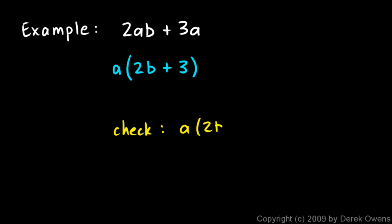a times (2b plus 3). It's easy to do. You can probably do this in your head. a times 2b is 2ab, and a times 3 is 3a, and that is in fact our original expression. So this is the correct answer. This is factored. It's broken apart into two factors. Two things that multiply together to give me the original expression.